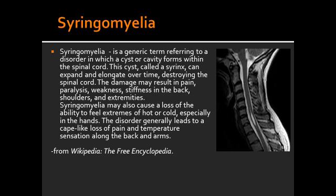What is Syringomyelia? Syringomyelia is a cystic enlargement of the central canal of the spinal cord. What is the first thing to be damaged in Syringomyelia? The crossing fibers of the spinothalamic tract are typically damaged first.